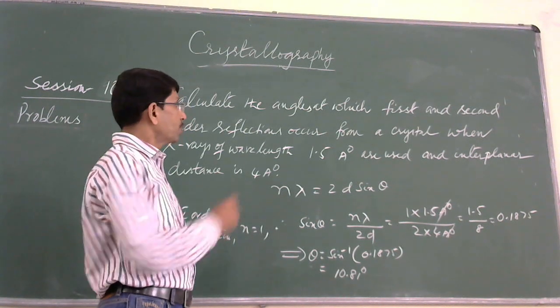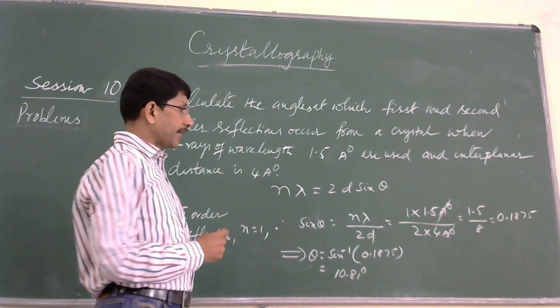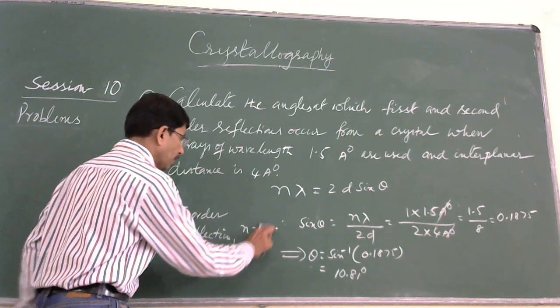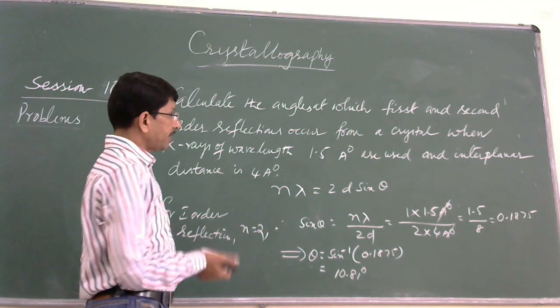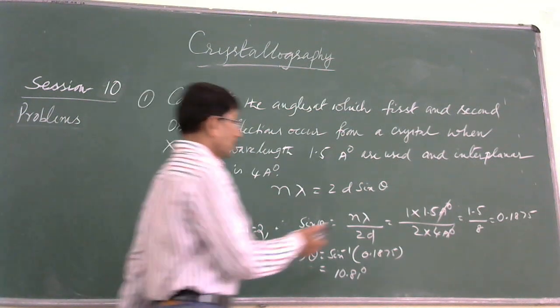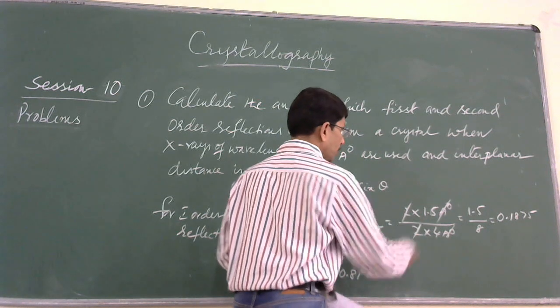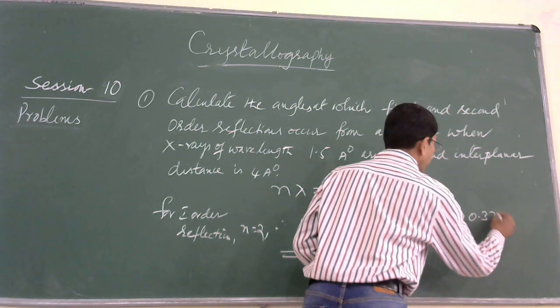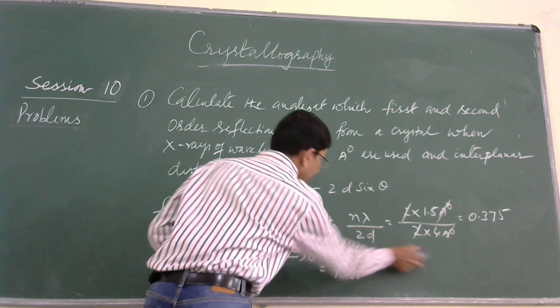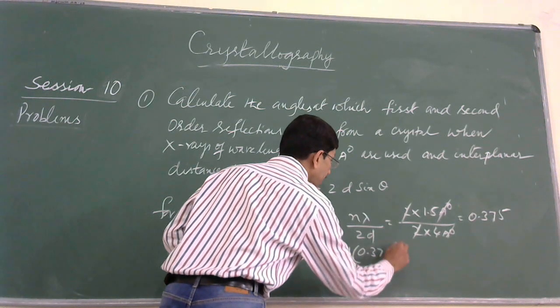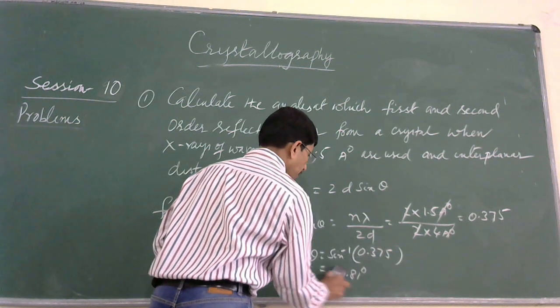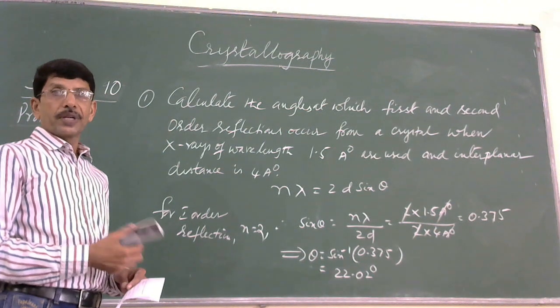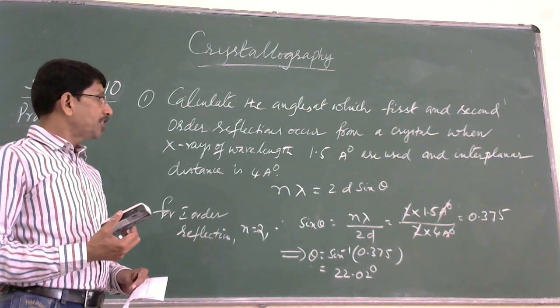This is how we can calculate the glancing angle from the data itself. Similarly, by making a small change where N equals 2 for second order, the only change we make is N equals 2. So 3 divided by 8 is 0.375, and theta is sine inverse of 0.375 degrees, which comes to 22.02 degrees.